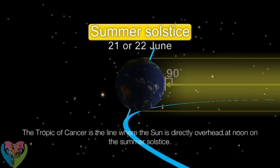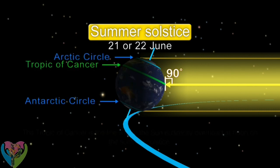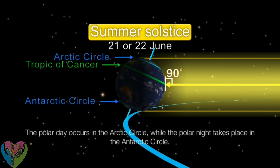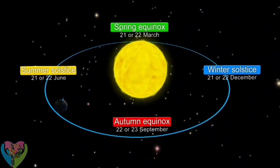The Tropic of Cancer is the line where the Sun is directly overhead at noon on the summer solstice. The polar day occurs in the Arctic Circle, while the polar nights take place in the Antarctic Circle.